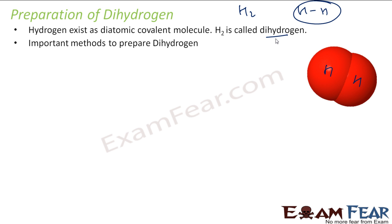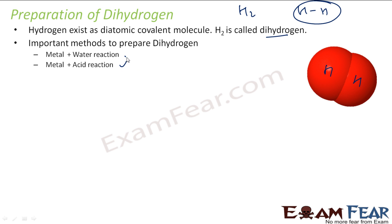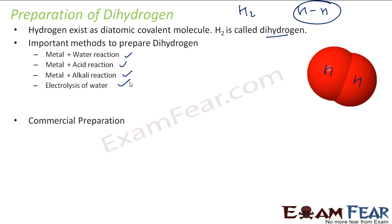There are various methods to prepare dihydrogen. You can prepare it from a metal and water reaction, from a metal and acid reaction — not all metals react with water, but some do. You can also use metal and alkali reactions, or electrolysis of water. Generally we have commercial ways and lab ways to prepare hydrogen.